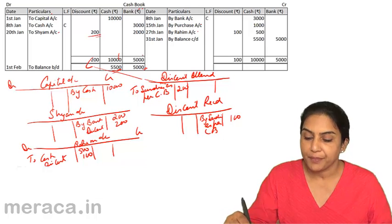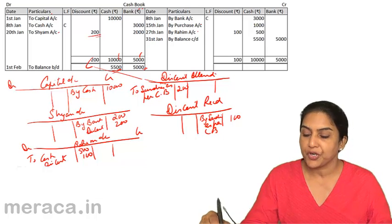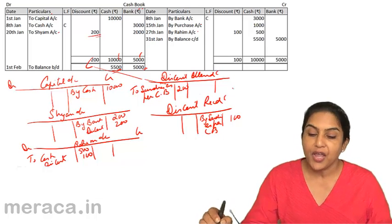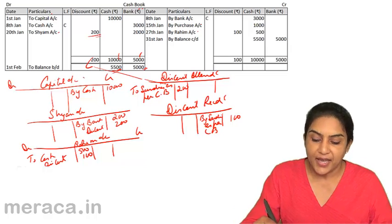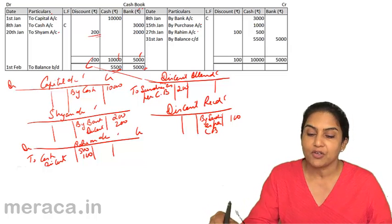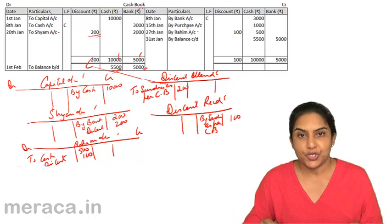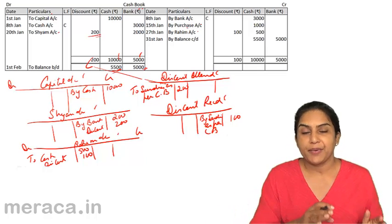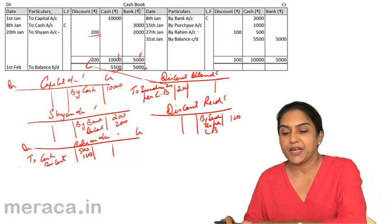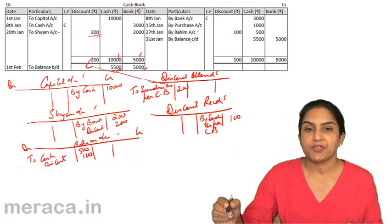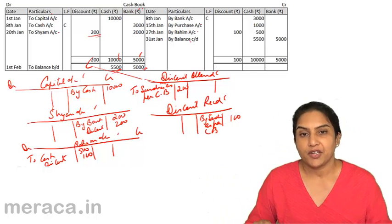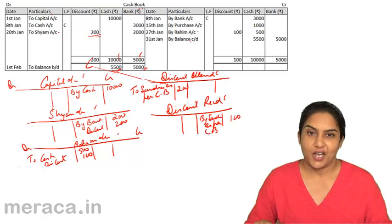So we have a cash account, a bank account, a discount allowed account, and a discount received account. The capital account, Shyam's account, Rahim's account — all the accounts which are here have to be posted. From the debit side, we post to the credit of the account. From the credit side of the cash book, we post to the debit of the respective accounts.